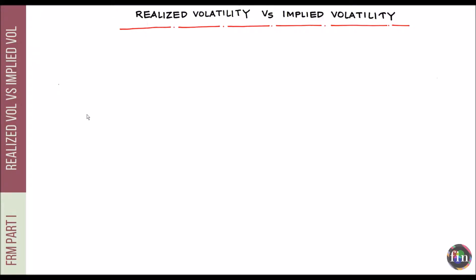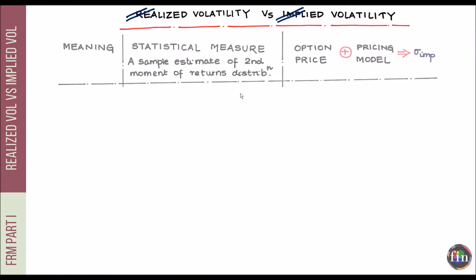In this short video, let's try to differentiate between two kinds of volatilities: realized volatility and implied volatility. Let's try to tabulate the differences between these two under various aspects or headings, beginning with a look at the meaning of each one of them.